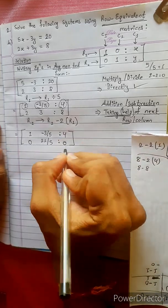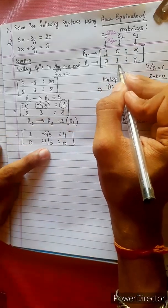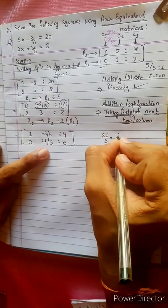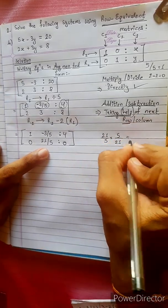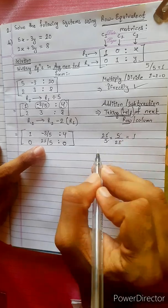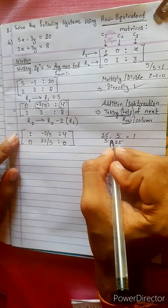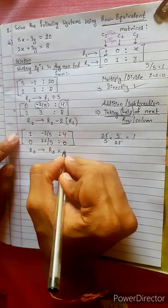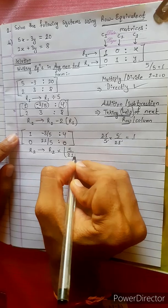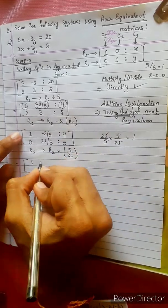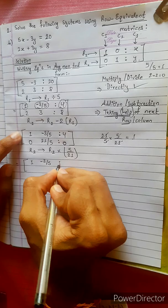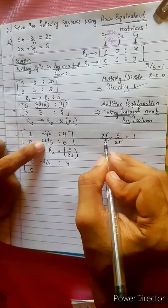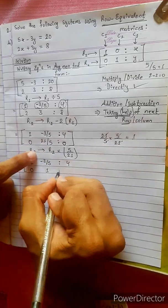So R2 is now: 0, 21 by 5, 0. We then change R2 into R2 multiplied by 5 by 21. R1 remains: 1, minus 3 by 5, 4. For R2: 0 times anything is 0; 21 by 5 times 5 by 21 equals 1; and 0 gives 0.